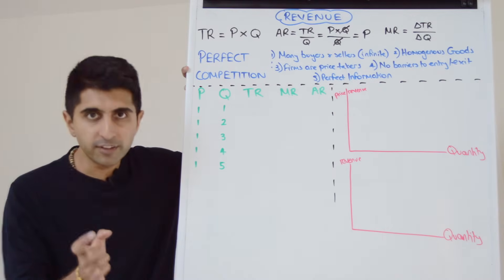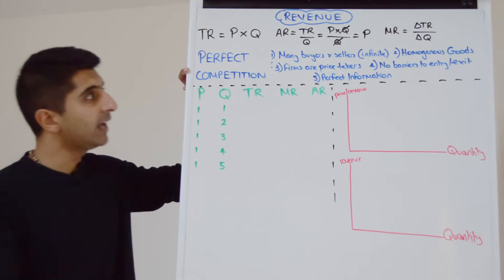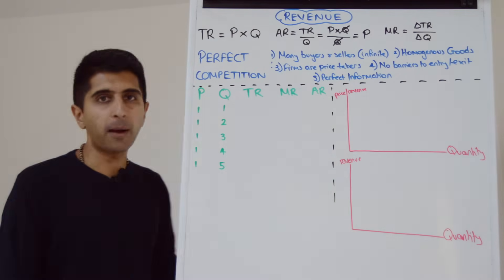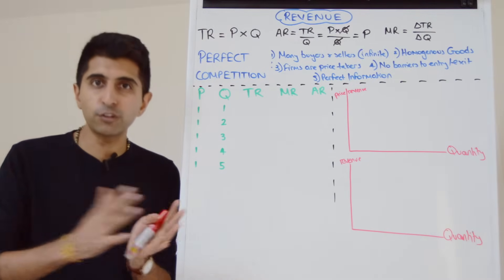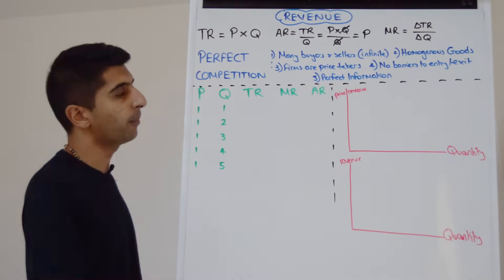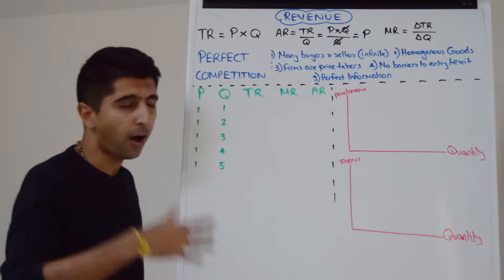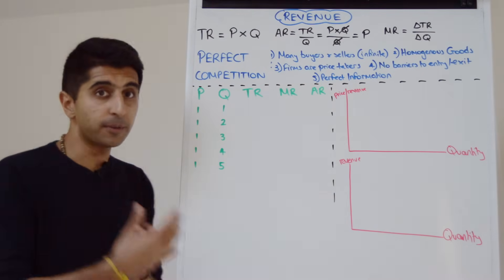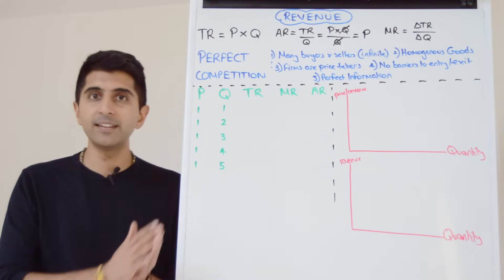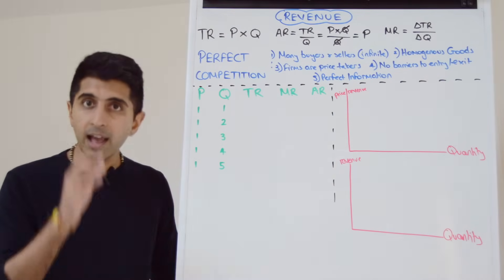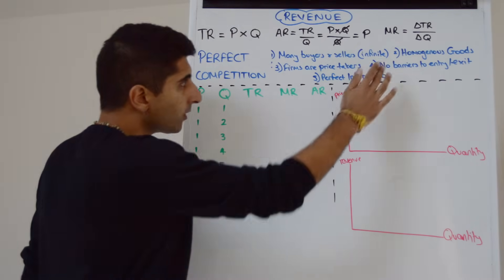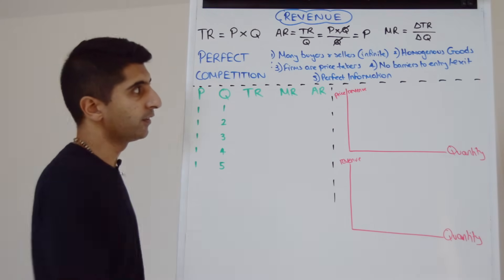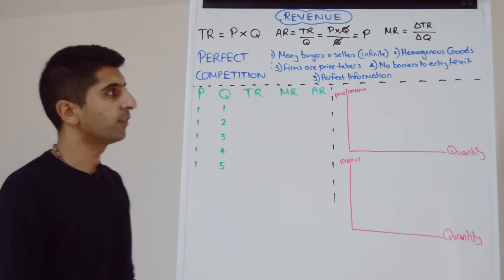We need to understand the characteristics of a perfectly competitive market first. In this kind of market there'll be many buyers and sellers — if I'm being precise, infinite buyers and sellers. This is a very theoretical extreme market structure with insane intense competition. All these firms are selling homogenous goods and services, meaning identical goods and services, and that means these firms are price takers. They have no ability to set their price; they have to take the price in the market and charge that price. There are no barriers to entry and exit, and there is perfect information of market conditions.